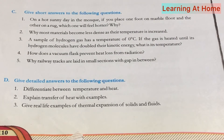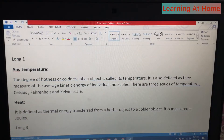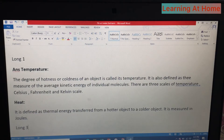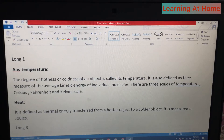Now we will note down the answers of long questions. Question number one: differentiate between temperature and heat. Temperature: the degree of hotness or coldness of an object is called its temperature; it is also defined as the measure of the average kinetic energy of individual molecules. There are three scales of temperature: Celsius, Fahrenheit, and Kelvin. Heat: it is defined as thermal energy transferred from a hotter object to a colder object; it is measured in joules.